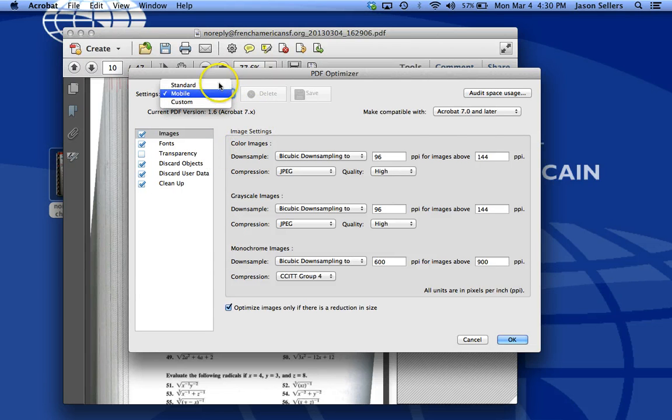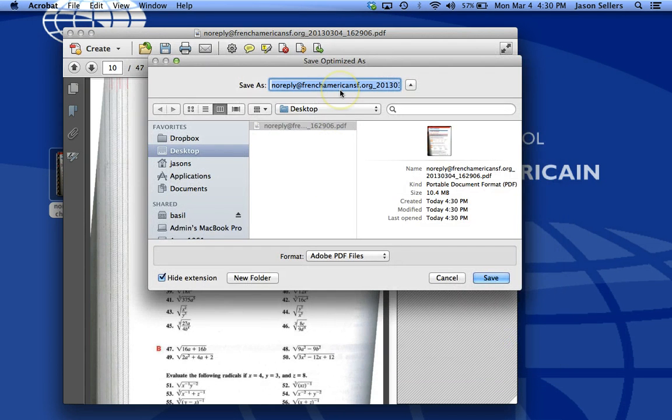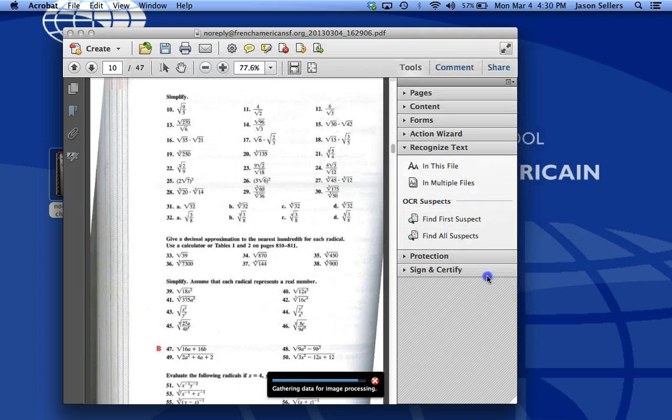And you'll have a few different settings. Mobile is probably going to be the smallest. So if you choose the Mobile setting and click OK, it's prompting me to rename it. I'll just call this Smaller PDF, put it on the desktop, and click Save.